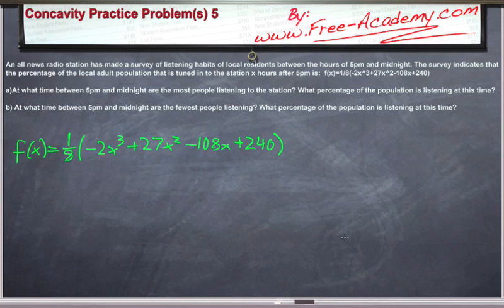The survey indicates that the percentage of the local adult population that is tuned in to the station x hours after 5 pm is equal to f of x equals one-eighth times negative two x to the third plus 27 x squared minus 108 x plus 240.